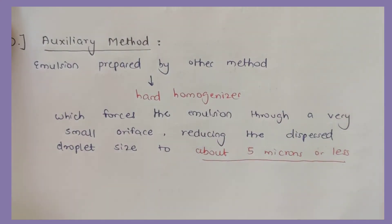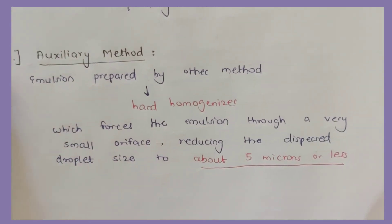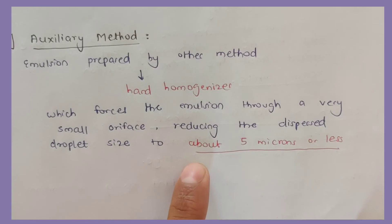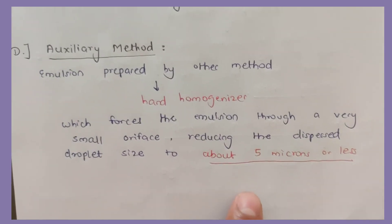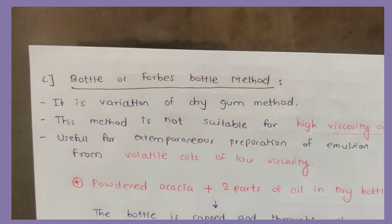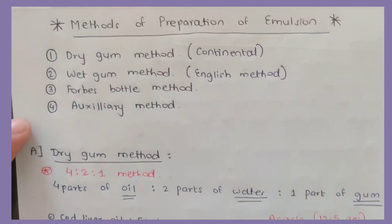These are the four methods: dry gum method, wet gum method, Forbes bottle method, and auxiliary method. I hope you understand.